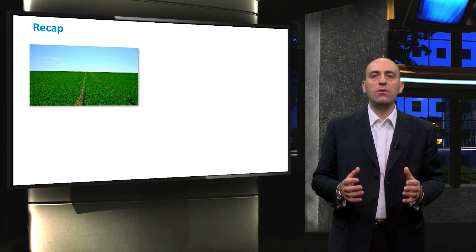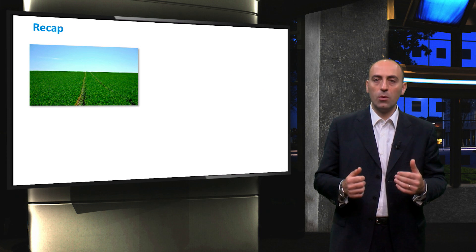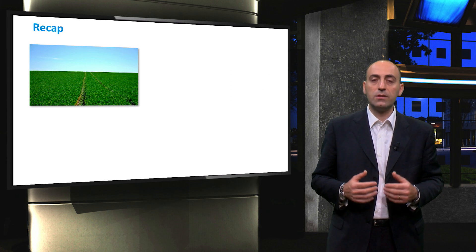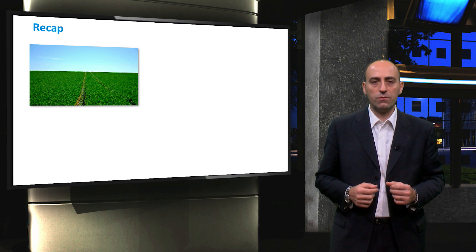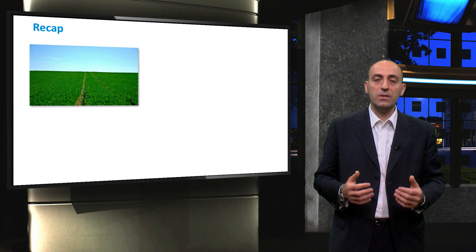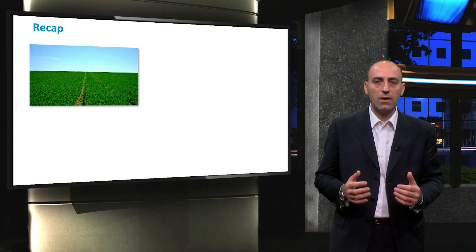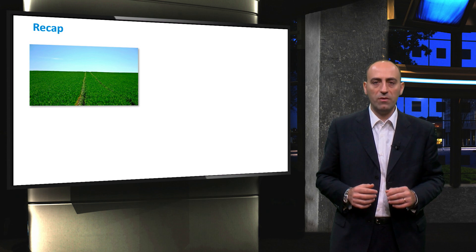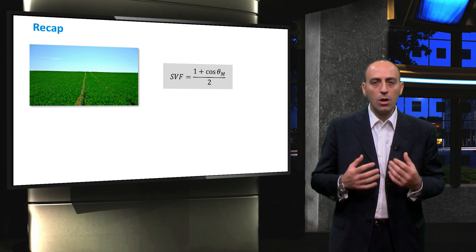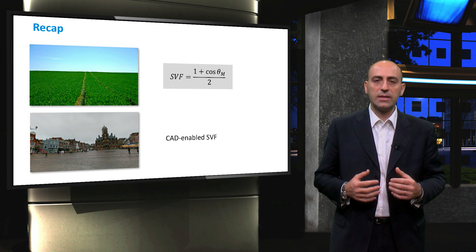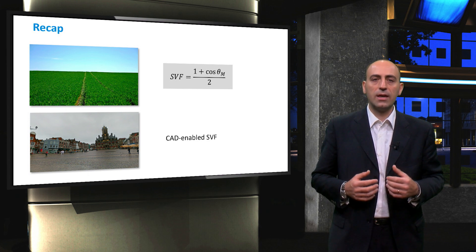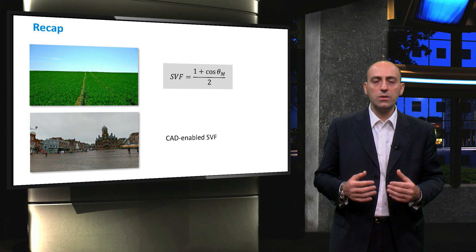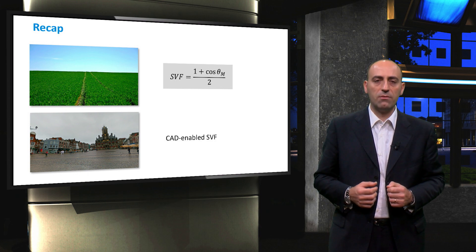To recap, in this video, first you learned about the importance of the SkyView factor in irradiance modeling. It is an important parameter used in the calculation of both diffuse and albedo components of irradiance. Moreover, when a PV system is designed for a free-horizon scenario, the SkyView factor depends only on the tilt angle of the PV module and is obtained using this equation. When a more complex horizon is considered, the SkyView factor depends on both the tilt angle and the surrounding environment. For this, we used a CAD-enabled approach that uses the SketchUp software in determining the SkyView factor.